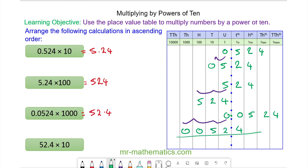And finally, 52.4 multiplied by 10 becomes 524.